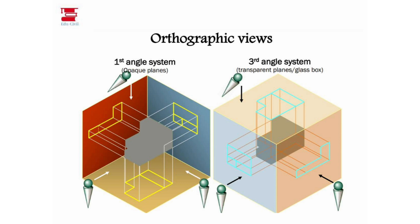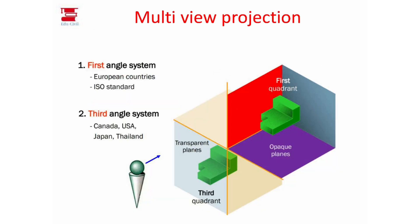The first angle system is used in European countries under ISO standards. The third angle system is used in Canada, USA, Japan, and Thailand. In first angle projection, the object is placed between the observer and the profile plane. In third angle projection, the profile plane is placed between the observer and the object. These classifications and other details are covered in the previous video.